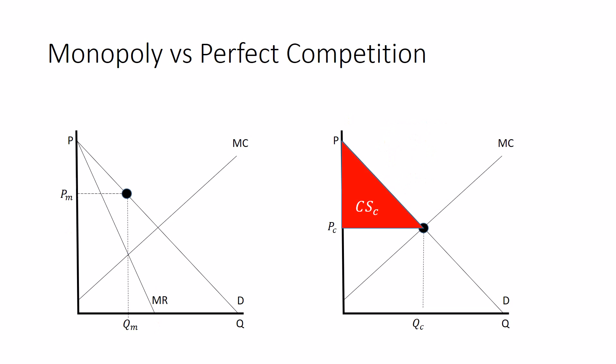In monopoly, it's the same idea, below the demand curve, above the price, but the price is higher. And so it's only that smaller area.